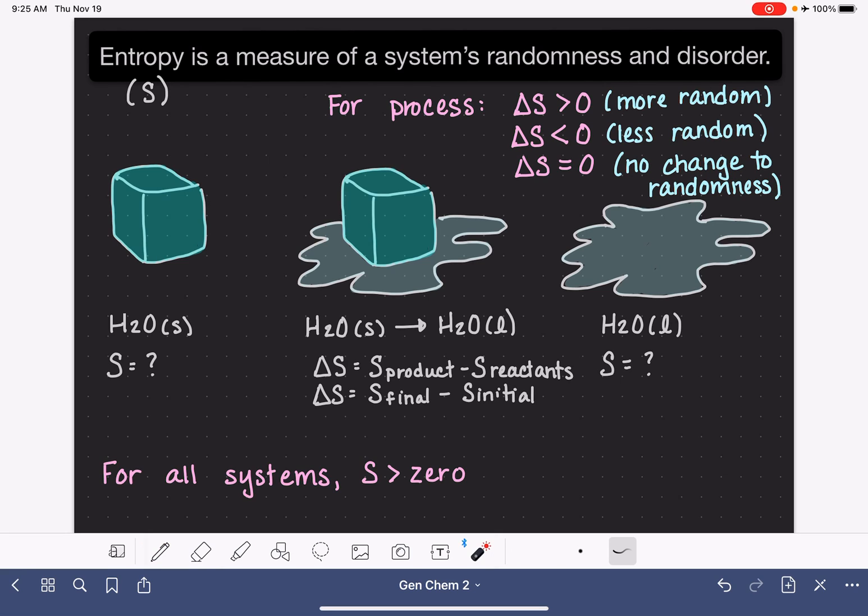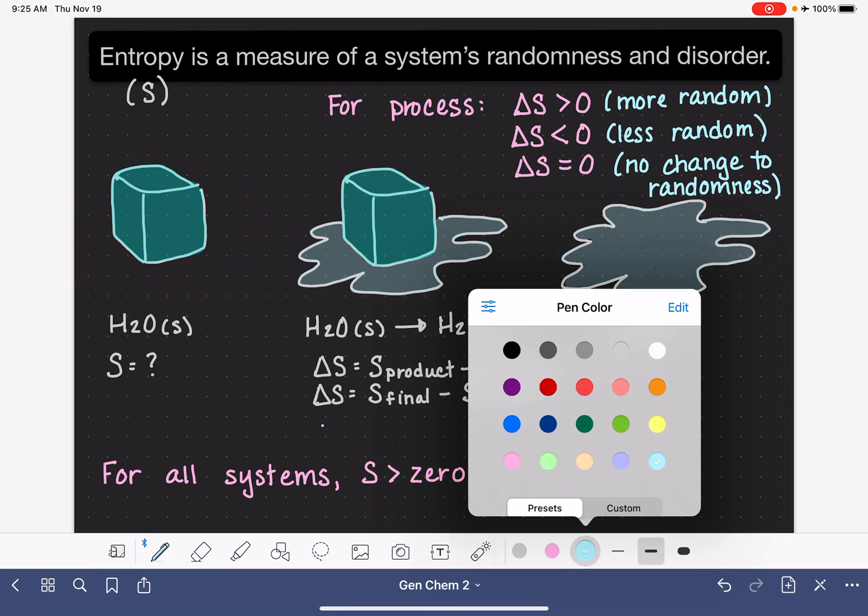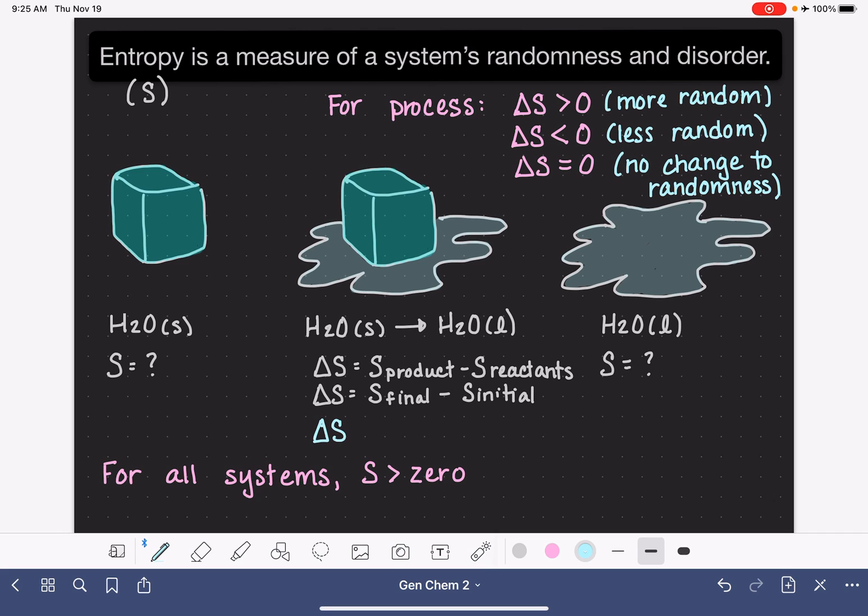For a process like this, solid melting, becoming a liquid, this is an example of a process where we are increasing in entropy. So for this particular process, the value of delta S is greater than zero, entropy increases.